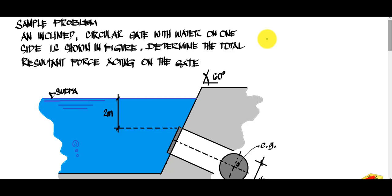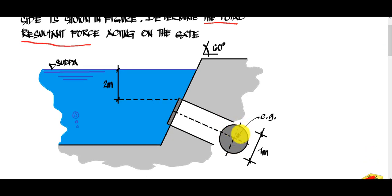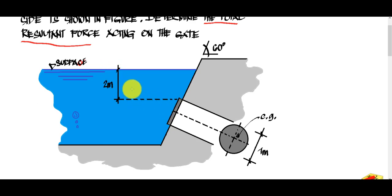Sample problem: an inclined circular gate with water on one side, as shown in the figure. We will be determining the total resultant force FR, which acts beneath the center of gravity. The circular gate has a diameter of 1 meter and is submerged 2 meters from the surface. The wall or gate is inclined at an angle of 60 degrees.